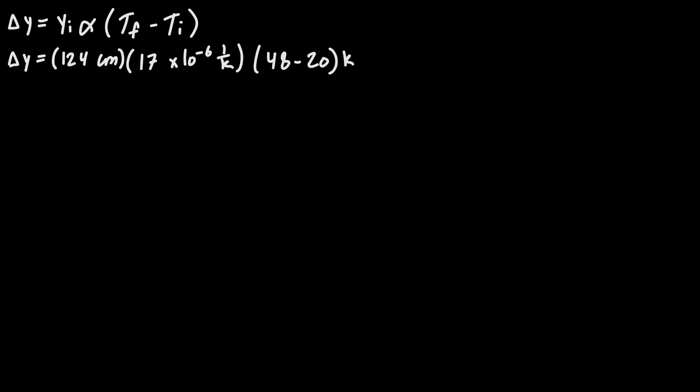So we have 124 centimeters as the initial value for y. Alpha is 17 × 10^-6 per Kelvin and again our change in temperature is going to be 48 minus 20. So when we plug that in we get the change in y is going to be 0.05998 centimeters.